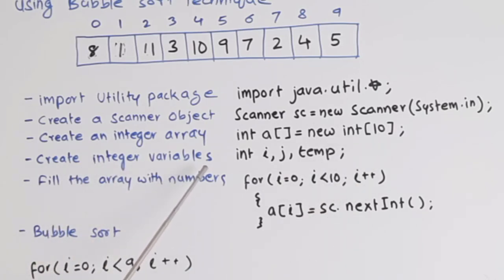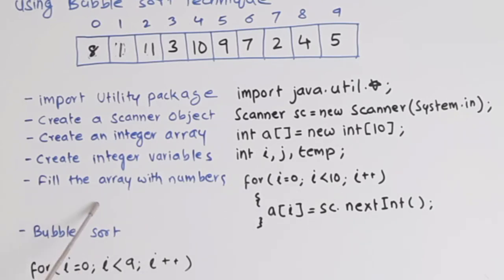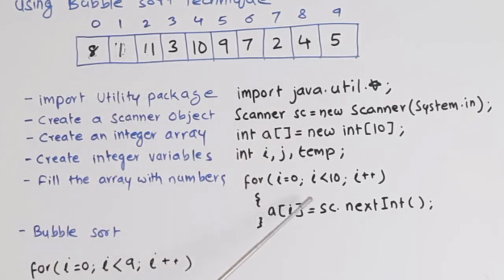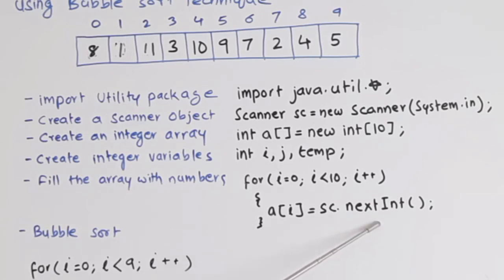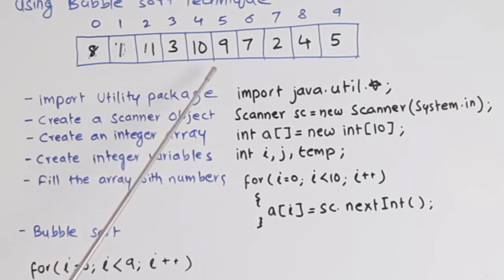Then we create integer variables: int i, j, and temp — three integer variables. Now we fill the array with numbers. Since there are 10 cells, we use a for loop: 'for(i=0; i<10; i++)'. Inside the loop, we display a message for the user to enter a number, then write 'a[i] = sc.nextInt()'. This accepts the number the user enters and stores it in the array cell, iterating from 0 to 9, filling each cell one at a time.